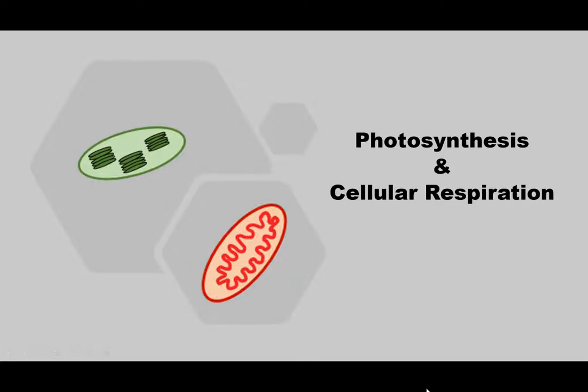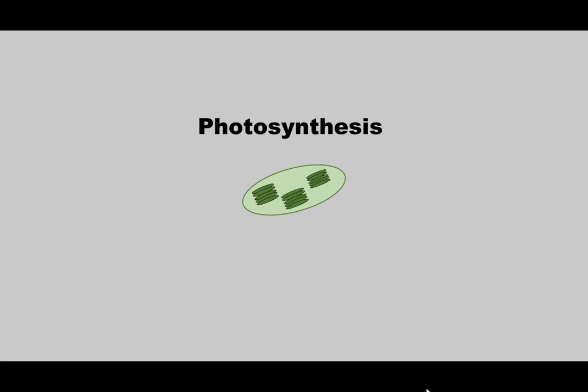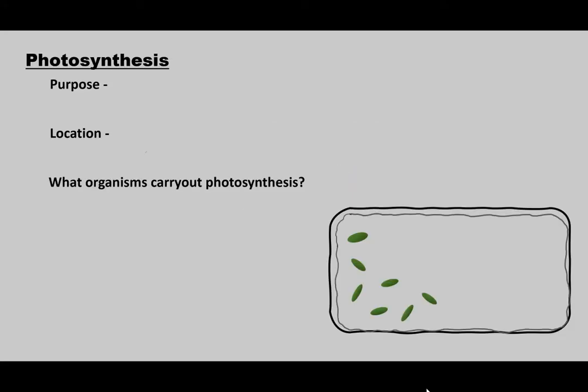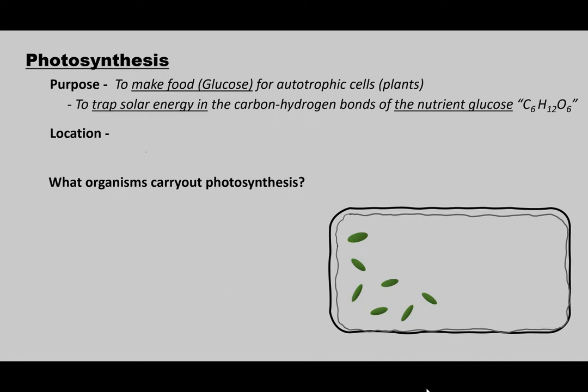Welcome to our video on photosynthesis and cellular respiration. We're going to start by taking a look at the process of photosynthesis. The purpose of this process is to synthesize food or glucose for autotrophs, things like plants. Another way to think about it is photosynthesis takes solar energy, the sun's energy, and stores it in the carbon-hydrogen bonds of glucose.